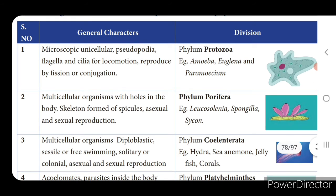Phylum Porifera — examples: Spongilla, Sycon. General characteristics: multicellular organisms with holes in the body, skeleton formed of spicules, and reproduction is by sexual and asexual methods.